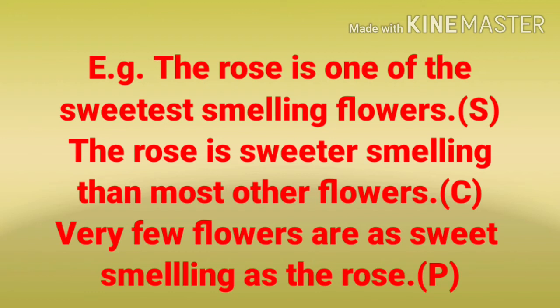We have to convert this superlative degree into comparative degree: 'The rose is sweeter smelling than most other flowers.' It is comparative degree because the format is: adjective + er + than + most other, or more + adjective + than + most other. When in superlative degree there is 'one of the,' in comparative degree there is 'most other' or 'many other.' We can start positive degree with 'very few': 'Very few flowers are as sweet smelling as the rose.' The format of positive degree here is: very few + as + adjective + as.